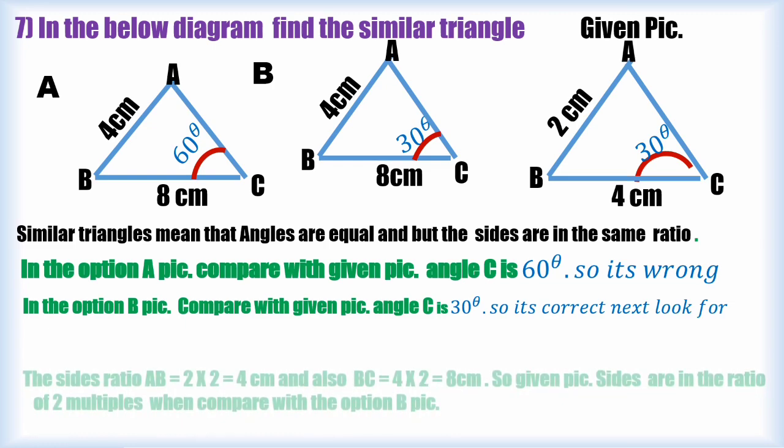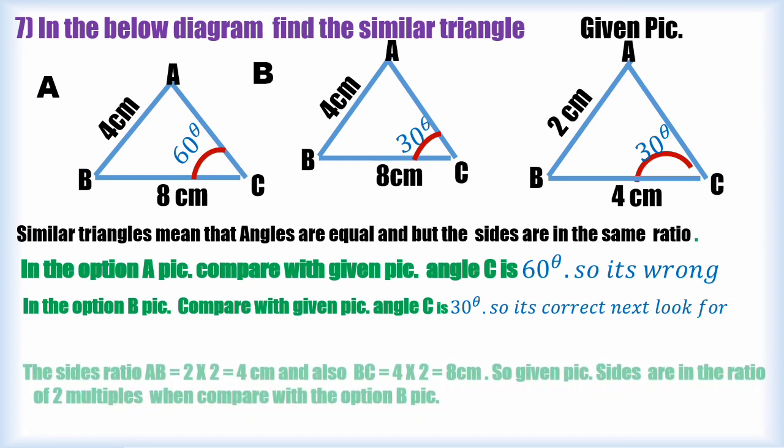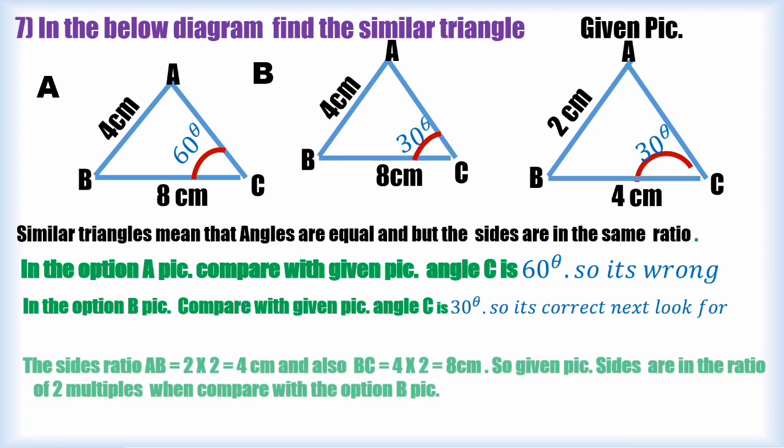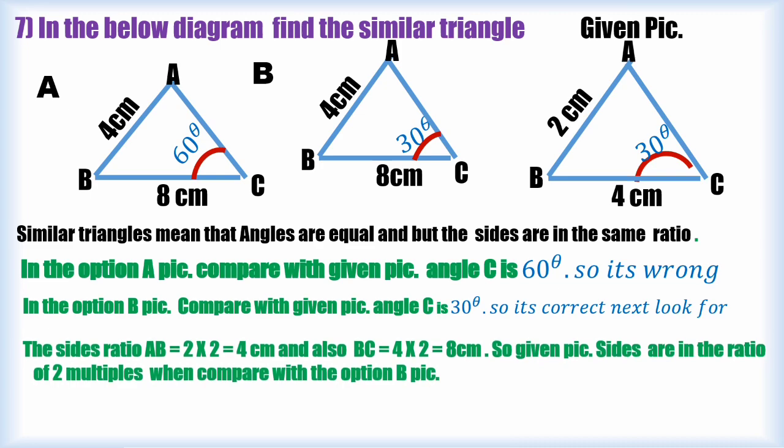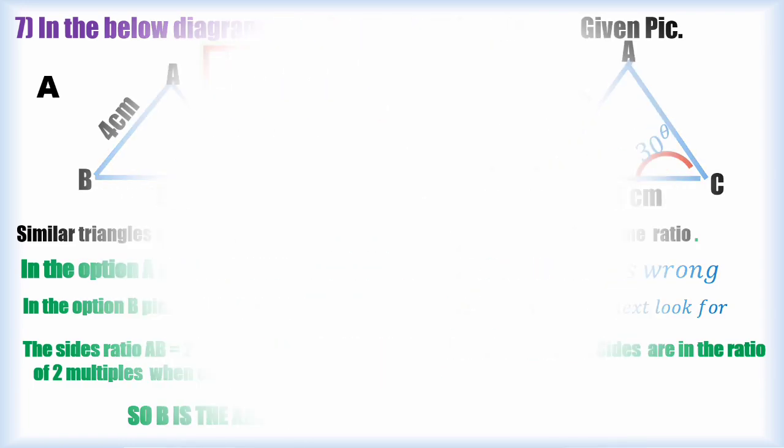By comparing option A with the given, the angle is different, so it is ruled out. Next I am comparing B with the given diagram. Here angle is the same and then sides are in the same ratio. So it is suited for the definition for the similar triangle. Hence B is the answer.